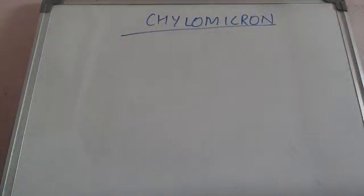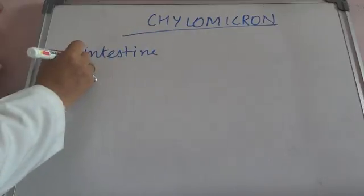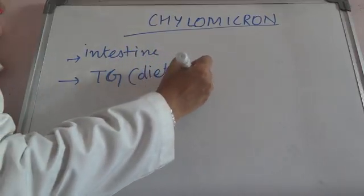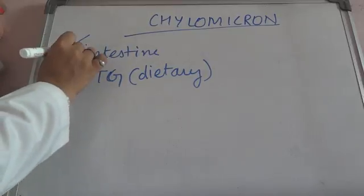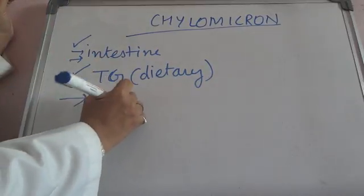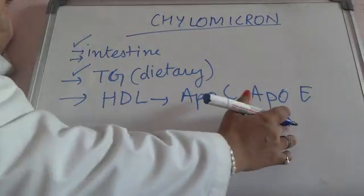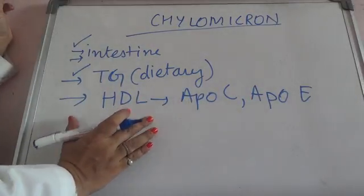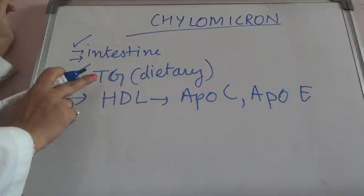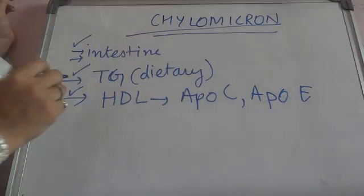The chylomicron is formed from the intestine, and its function is to carry the dietary triglycerols. We have to remember three things: it is synthesized in the intestine, it carries dietary triglycerols, and HDL donates ApoC and ApoE that is required for the metabolism of chylomicrons.